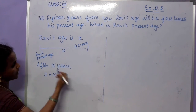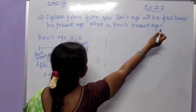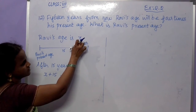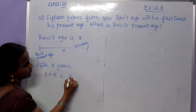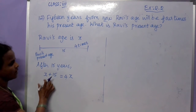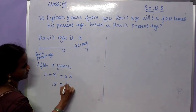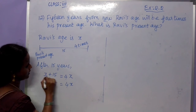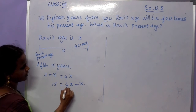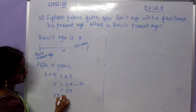After 15 years his age is x plus 15, and it will be 4 times his present age. So x plus 15 is equal to 4 into x, that is 4x. Let us take the variables on one side and numbers on the other: 15 is equal to 4x minus x, which gives 3x. So 3x is equal to 15.